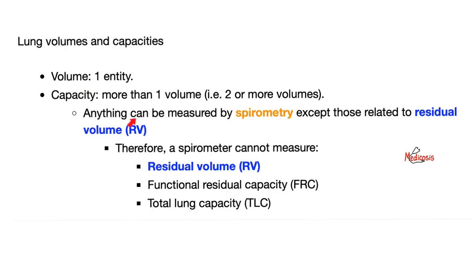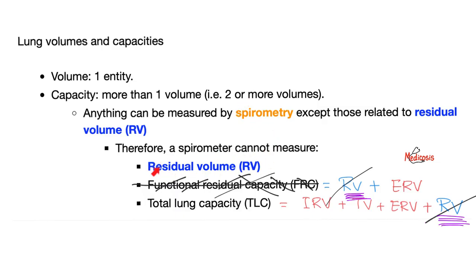All of these volumes and capacities could be measured by a device known as spirometer or spirometry, except anything related to the residual volume. Spirometry cannot measure the residual volume. And therefore, spirometry cannot measure the functional residual capacity, because functional residual capacity equals residual volume plus expiratory reserve volume. Moreover, total lung capacity is all of the volumes added together, including residual volume. Since spirometry cannot measure the residual volume, therefore spirometry cannot measure the total lung capacity.